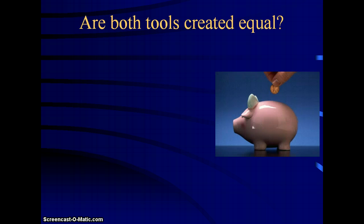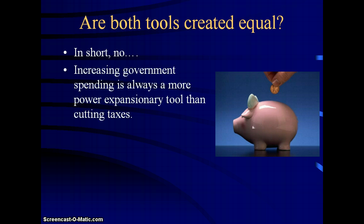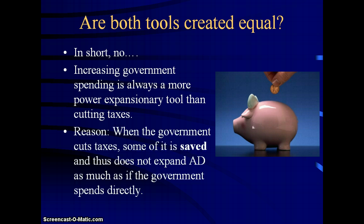Now continuing our lesson - are these two tools created equally? The answer is no. Government spending is always a bit more powerful as an expansionary tool than cutting taxes is. If the government spends money, one of the components of GDP is G - government spending. So if they spend $100, all $100 goes right into G. But if the government cuts taxes by $100, and people save 10% of their money, that means 10% of that $100 won't ever make it into the economy. People will spend 90% - maybe $90 - but not the whole thing. So government spending is always a little more powerful than cutting taxes as an expansionary tool.